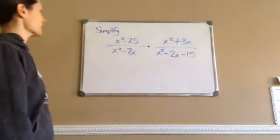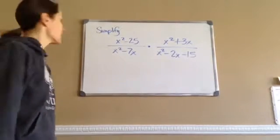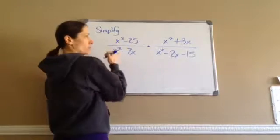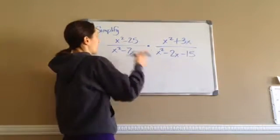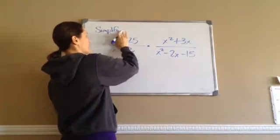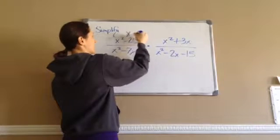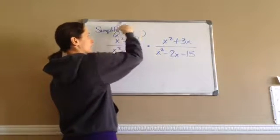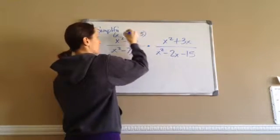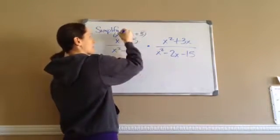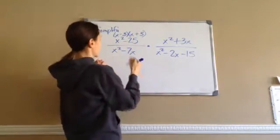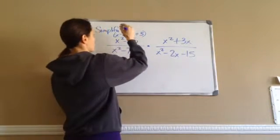If you were to look at this problem you'd be like, what? What in the world am I supposed to do? Hopefully you remember that in order to simplify, we're going to factor each one of these sections. So I'm going to want to factor this and hopefully you're going to see that that would be x, x which would become x squared and then 5 times 5 but we need 1 to be plus and 1 to be minus for it to get rid of the 5x in the middle.